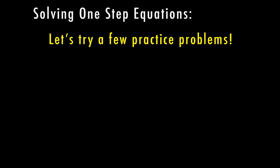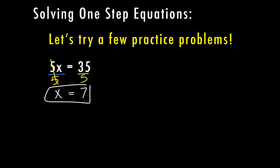A lot of these earlier problems are going to be pretty easy to solve without actually doing the math work, but it's important to understand the steps so that you can handle harder problems. So let's go through some practice problems. We have 5 times x — the opposite of multiplying by 5 is dividing by 5, and whatever I do to one side, I have to do to the other. 5 divided by 5 is 1, 1 times x is x, and on the right side 35 divided by 5 equals 7. You can double check: 5 times 7 is 35.